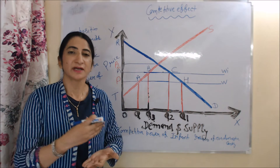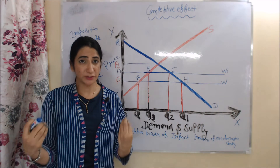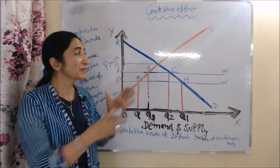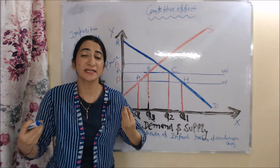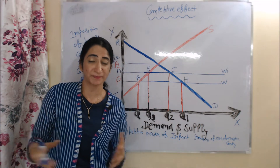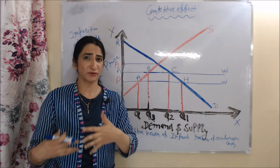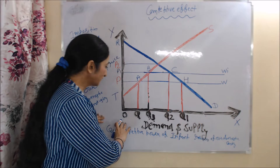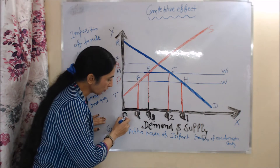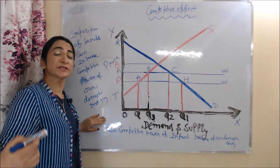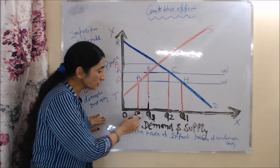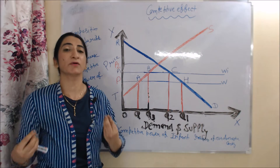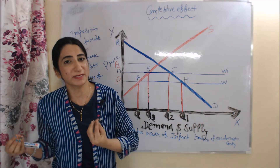We will talk about the competitive effect. Competitive effect means imposition of tariff can increase the competitive power of our domestic industry. Before tariff, our domestic production was OQ. But after tariff, our domestic production increased — now we have OQ3 domestic production. This increase in domestic production can increase the competitive power of infant industries of our domestic country.